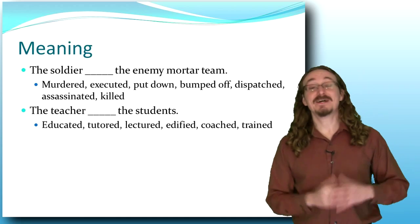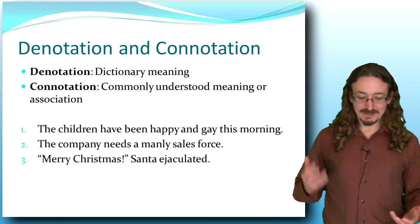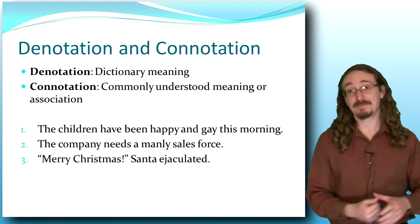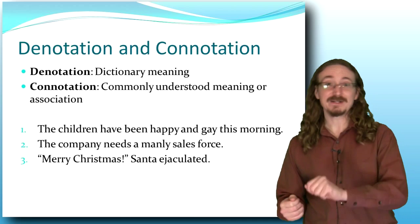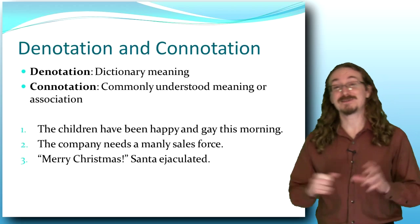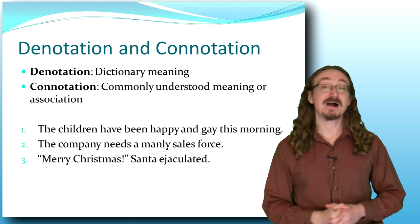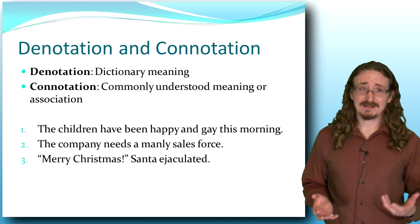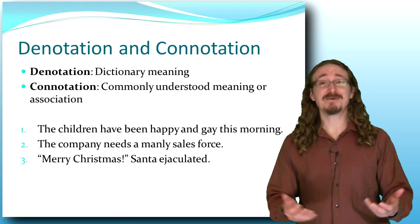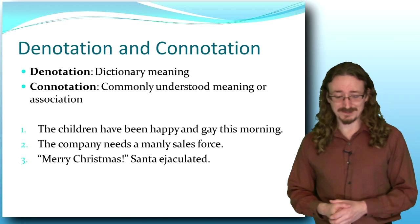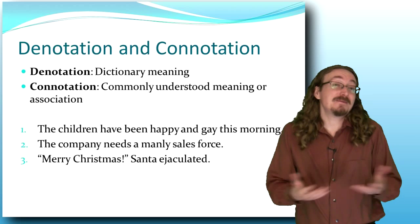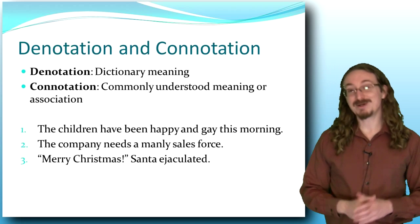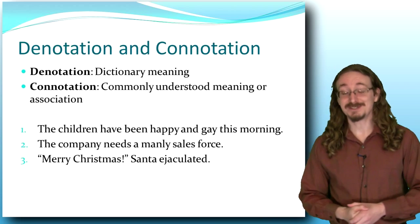Now we get into denotation and connotation. The denotation — with a D — is what's in the dictionary. If you look the word up in the dictionary, you get the definition there; that's what it officially means according to Webster or Oxford or whoever. Then we have the connotation, which is the way the word is actually used amongst a given audience. You might look the word up in the dictionary — maybe it's not even in the dictionary, but people are still using it. Or maybe the way people use it is very different from the definition you see there.